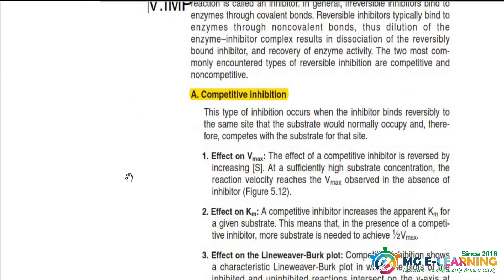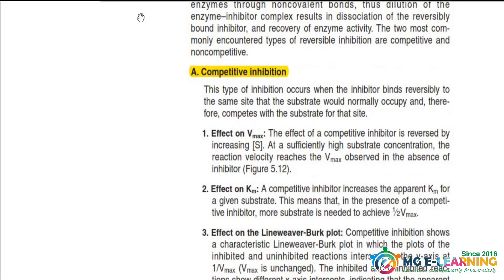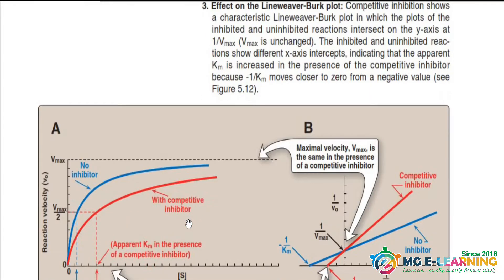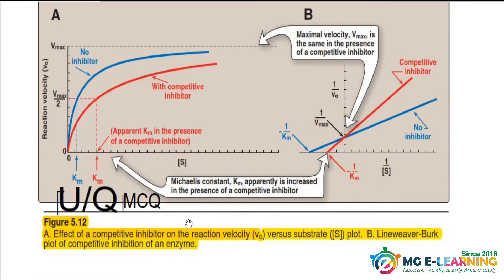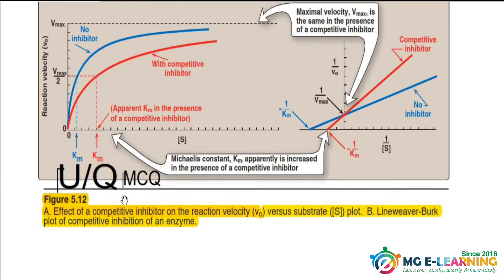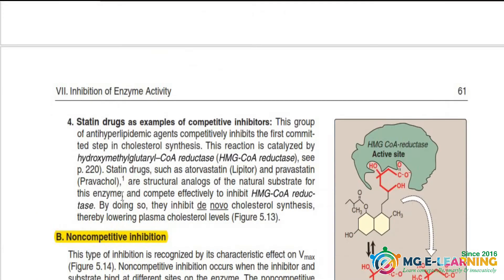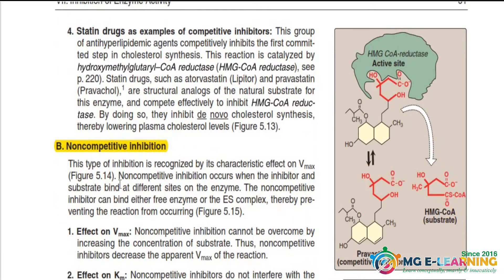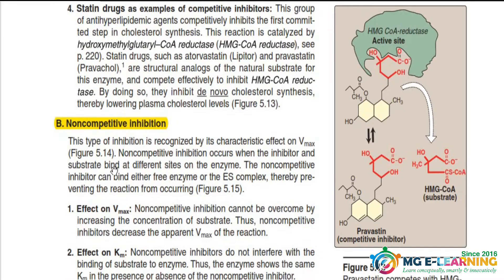Competitive and non-competitive inhibition — you have to cover these with examples and with the graphs. These graphs are a UQ and very famous in MCQs. The same goes for non-competitive inhibitors — you have to do this completely.